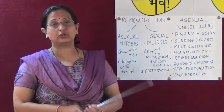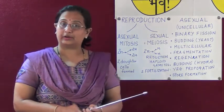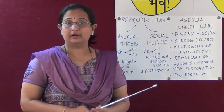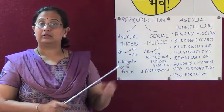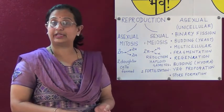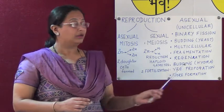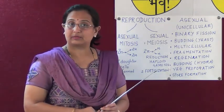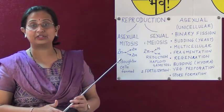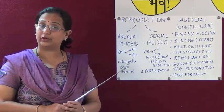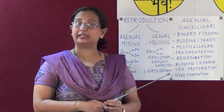Budding in hydra: In a matured hydra, a small outgrowth called a bud develops from the cell body. The digestive cavity and body of the hydra is continuous with this bud. The bud gradually grows in size, receiving nourishment from the parent hydra. When it grows sufficiently, it detaches itself from the parent body and grows to form an adult hydra.